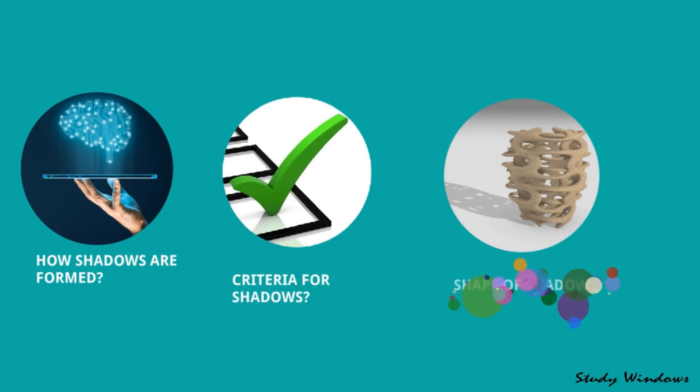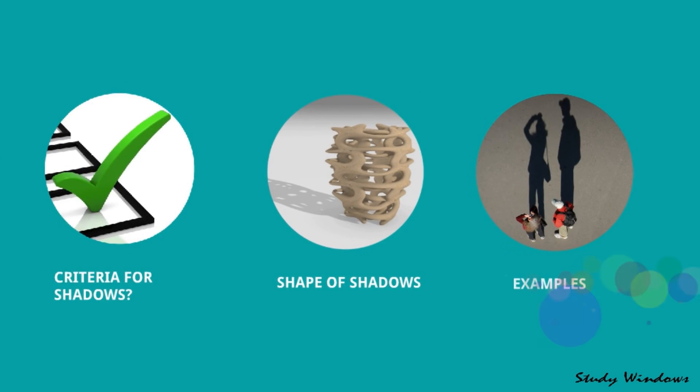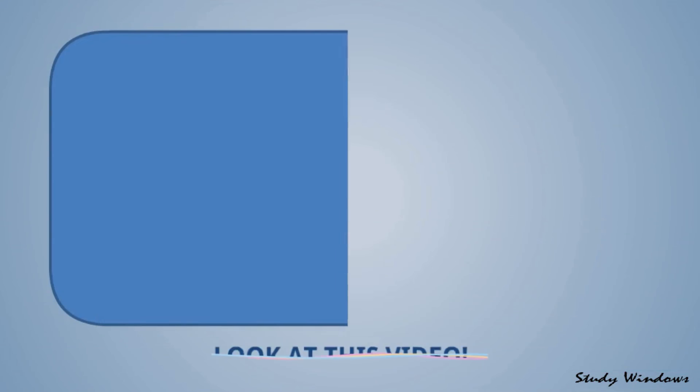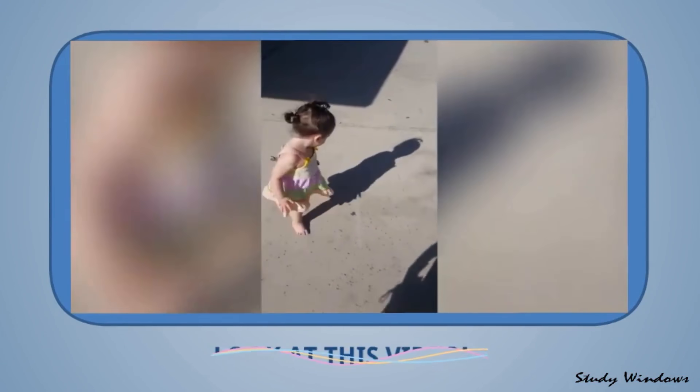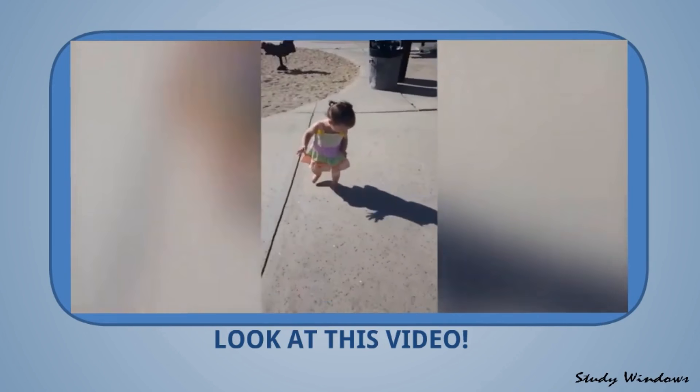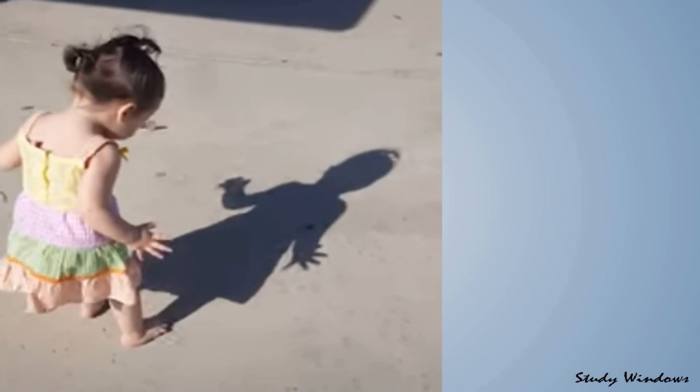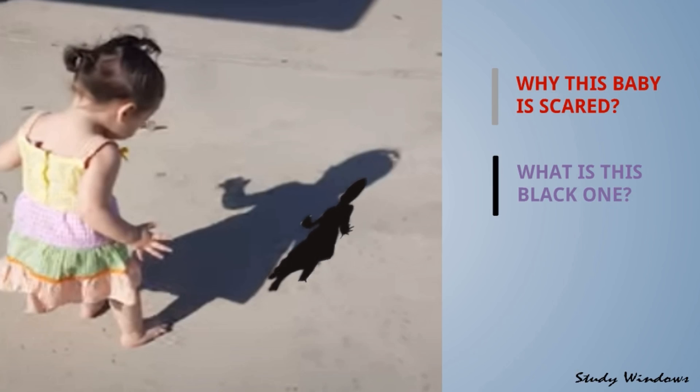Look at this video. A little girl was just walking and suddenly she saw a dark thing and she is scared. She didn't know what is this and where it came from. So in this picture, why is this baby scared and what is this black portion which looks like this baby girl?